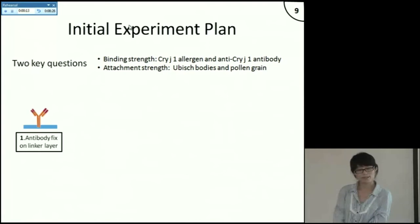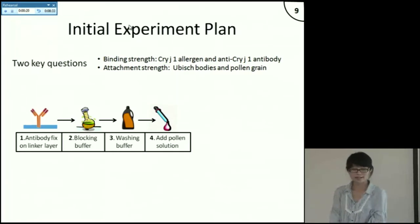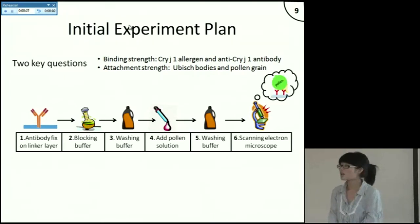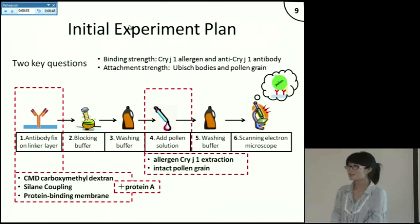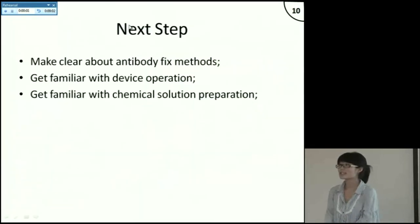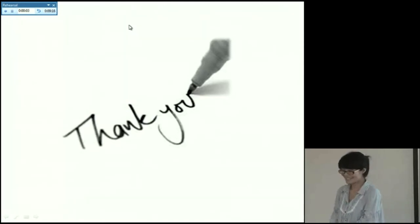The simplest way to confirm this is to directly observe the phenomena under a microscope. I will first fix the antibody on a linker layer and after some steps verify whether a whole pollen can be successfully captured by the antibody, to determine whether the future research work is feasible. Before the observation, I need to find a way to fix antibody on the linker layer and to find a buffer solution that can realize allergen extraction without totally destroying the pollen structure. So the next step is to clarify antibody fixation methods, get familiar with device operation, and prepare the chemical solutions. That's all for my presentation — thank you very much for listening.